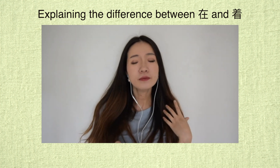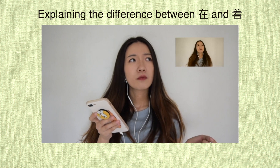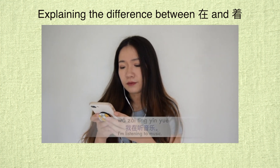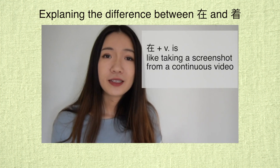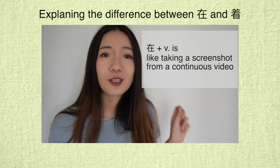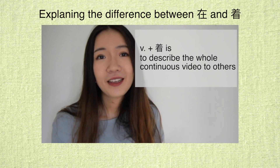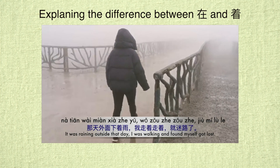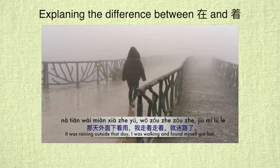For example, when your friend texts asking what you're doing, you look at your memory from five seconds ago, capture one screenshot, and send that information to your friend. 我在听音乐 — 在 plus verb is like taking a screenshot of a continuous video, while 着 is like describing the whole continuous video to others. 那天外面下着雨，我走着走着就迷路了。If you want a clear picture of the basic Chinese grammar system, check out my Structured Review Plan course, which can switch your brain into Chinese mode within two to four weeks.